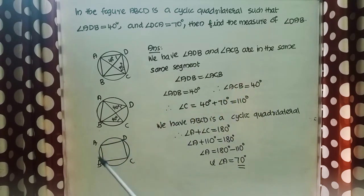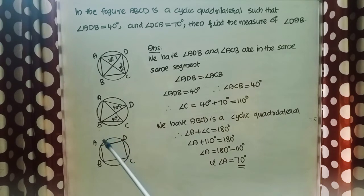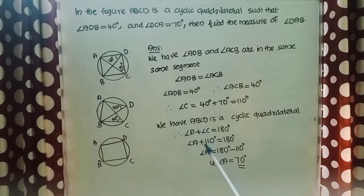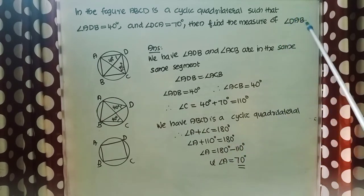Since ABCD is a cyclic quadrilateral, the sum of opposite angles equals 180 degrees. So angle A plus angle C equals 180 degrees. Angle C is 110 degrees, so angle A plus 110 degrees equals 180 degrees. Therefore angle A equals 70 degrees, that is angle DAB equals 70 degrees.